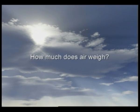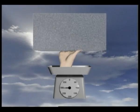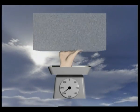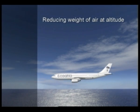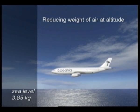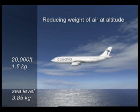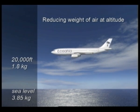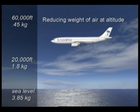How much does air weigh? Well, at 1.2 kilograms per cubic metre, most people would find it hard to lift the weight of air in the average sized room. But to complicate matters, the weight of the air changes with altitude. At sea level, 3 cubic metres of air will weigh 3.85 kilograms, but weigh only 1.8 kilograms at 20,000 feet, and less than 0.45 kilograms at 60,000 feet.